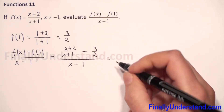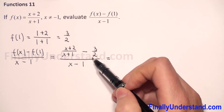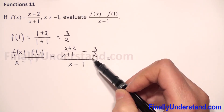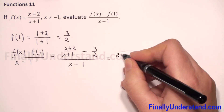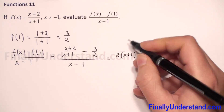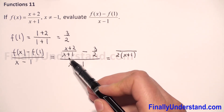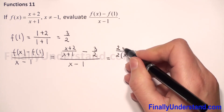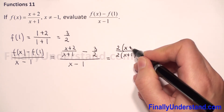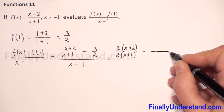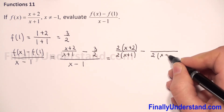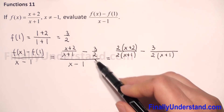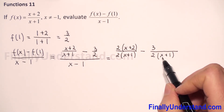This is equal. Because I have a difference of two fractions, I need to have the same denominator. The denominator will be 2 times x plus 1. Because I multiplied this denominator by 2, I have to multiply this numerator by the same number, so 2 will be times x plus 2 minus. The denominator will be the same: 2 times x plus 1.